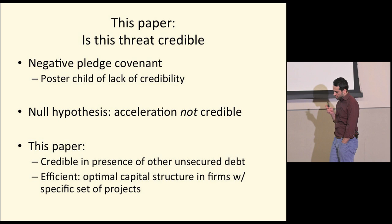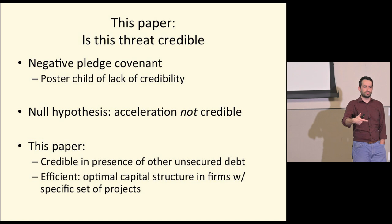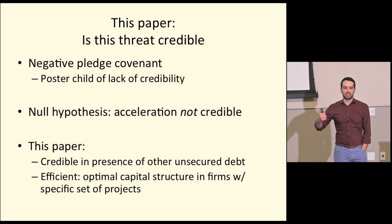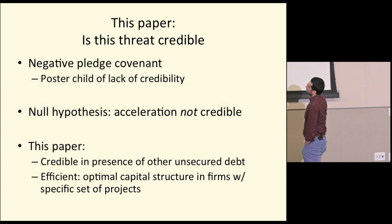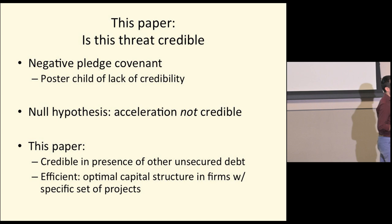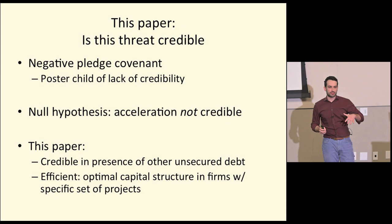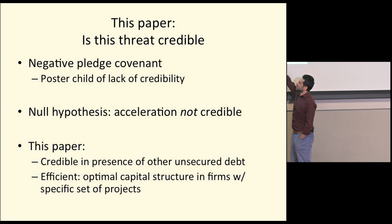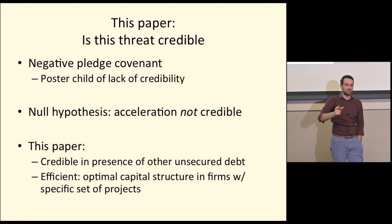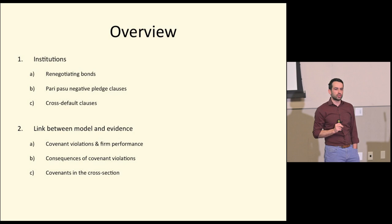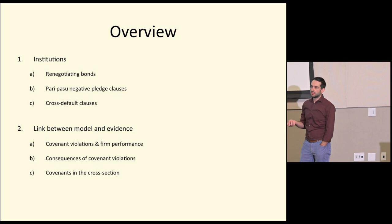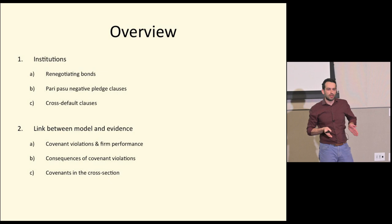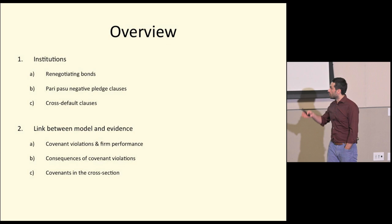The paper does two things. First, it asks when is the threat to call debt credible. The threat is credible only if: (a) there is other unsecured debt, (b) this unsecured debt has no covenants, and (c) the firm has a specific set of projects, which makes this arrangement efficient. Second, you'd expect to see negative pledge covenants paired with other unsecured debt — otherwise you wouldn't see them at all. I'll discuss whether the institutional setup supports the mechanism and examine some other empirical predictions.